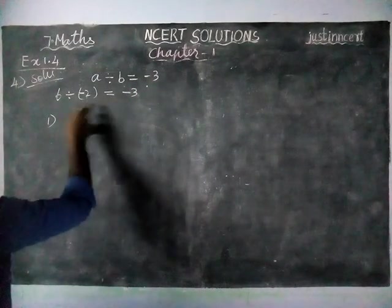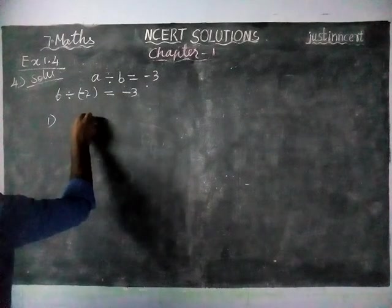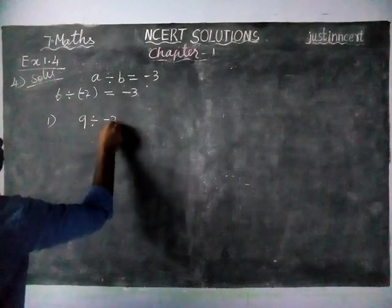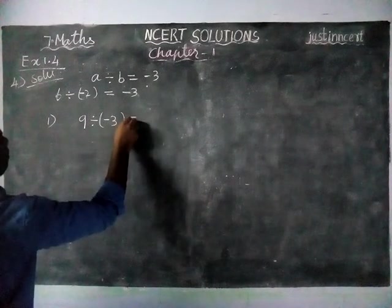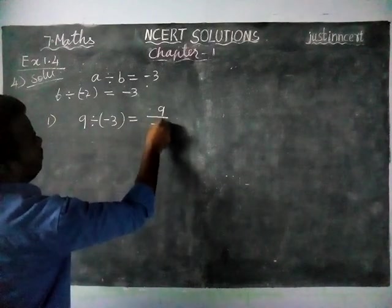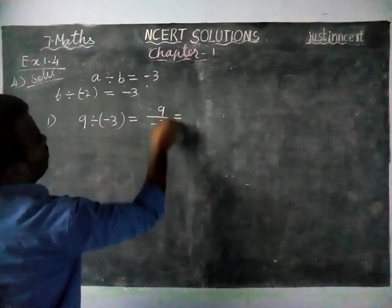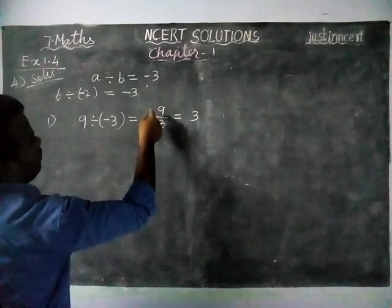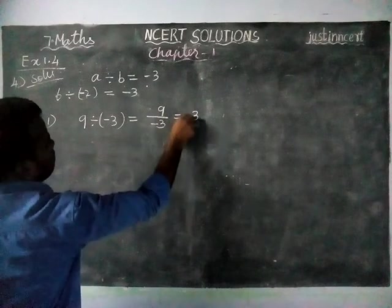So now we are going to take it, 9 divided by minus 3 is equal to, when we are dividing different numbers, we will get the answer is minus.